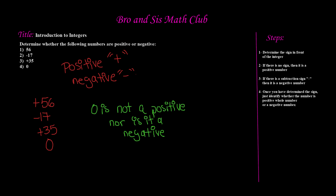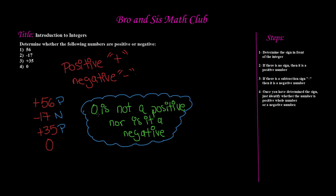We know that 56 is a positive because it has a plus sign, so we'll write a P. 17 is a negative because it has a minus sign. 35 is a positive because it has a plus sign. And zero — zero is not a positive, nor is it a negative number. Remember this rule always whenever you're dealing with integers.